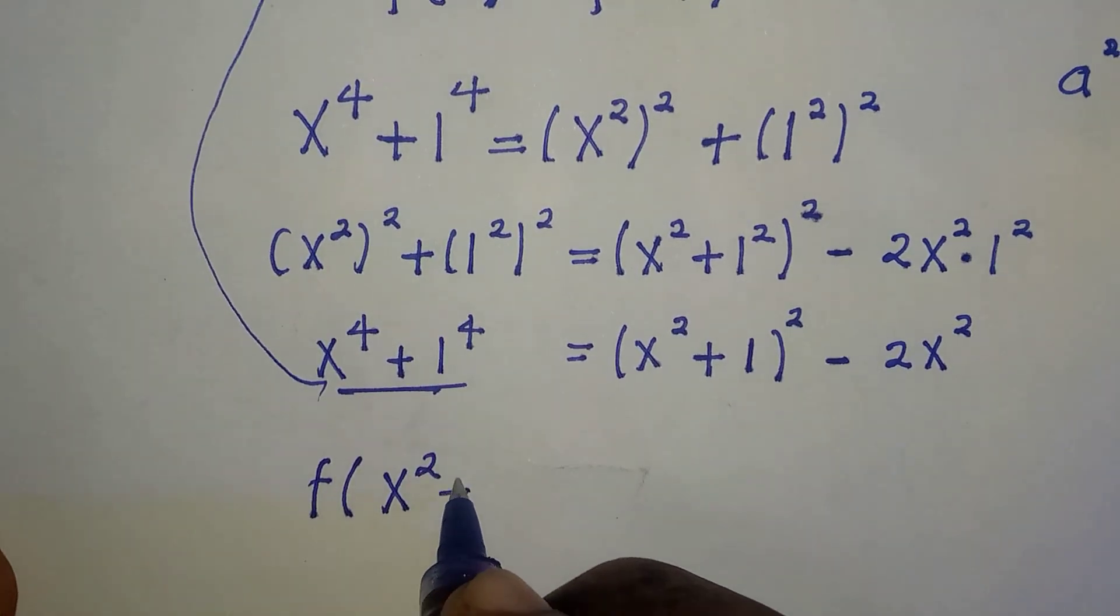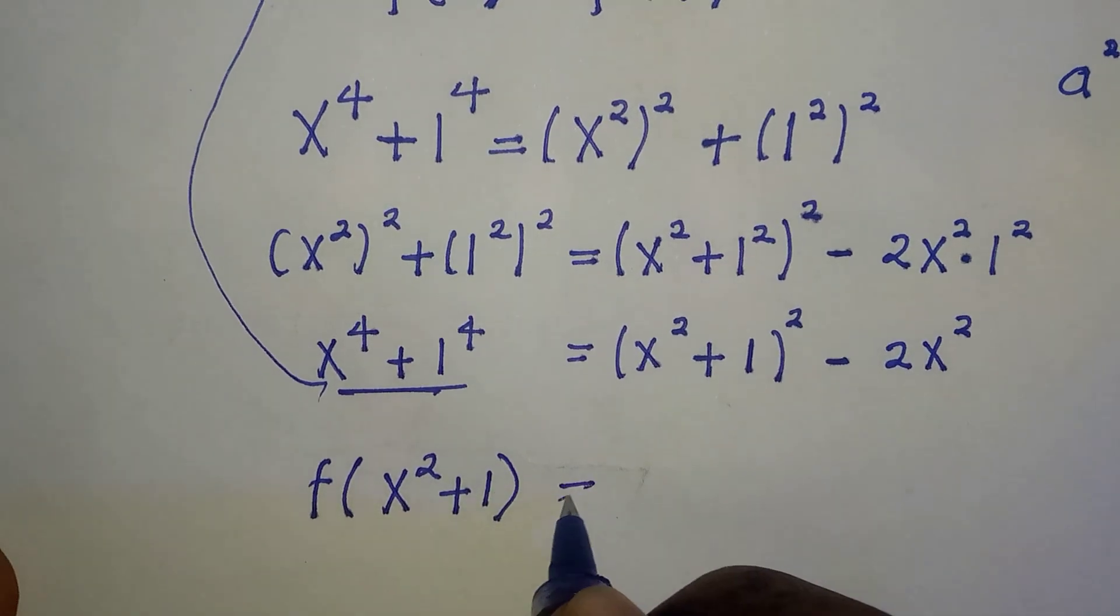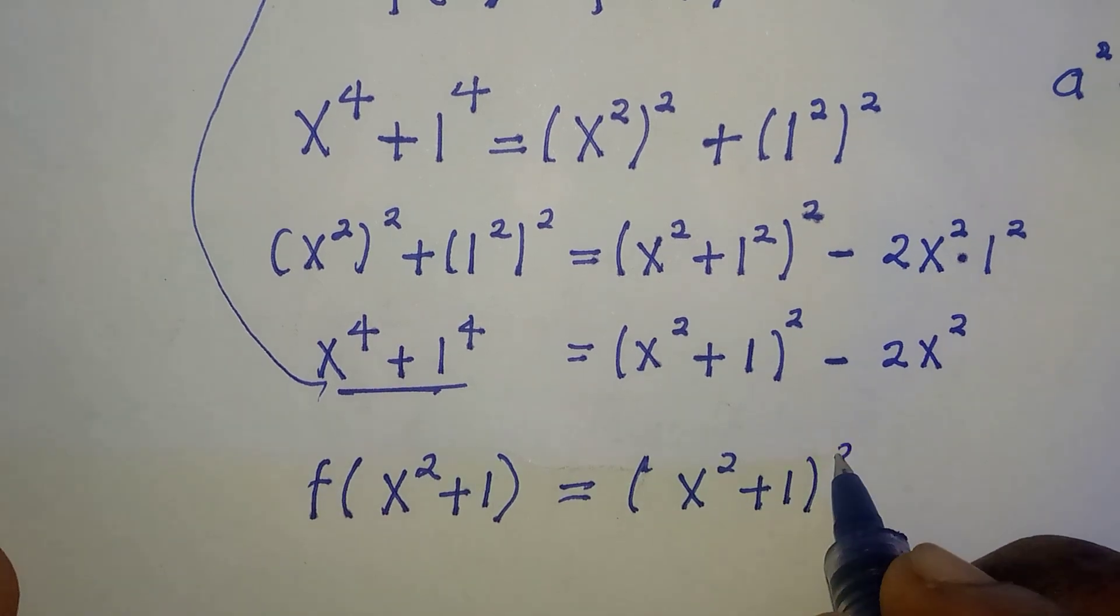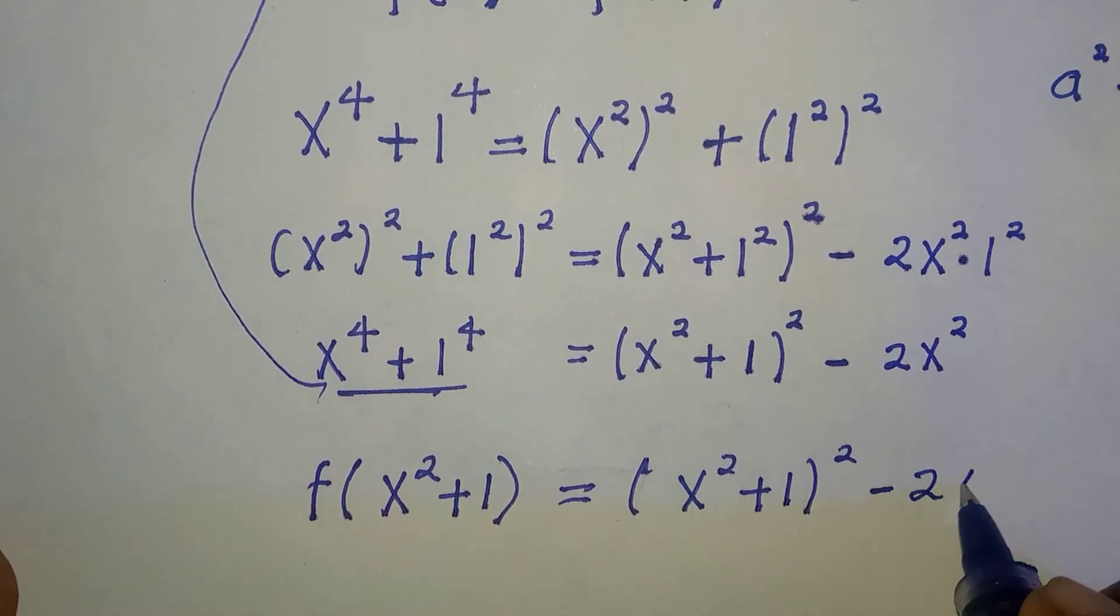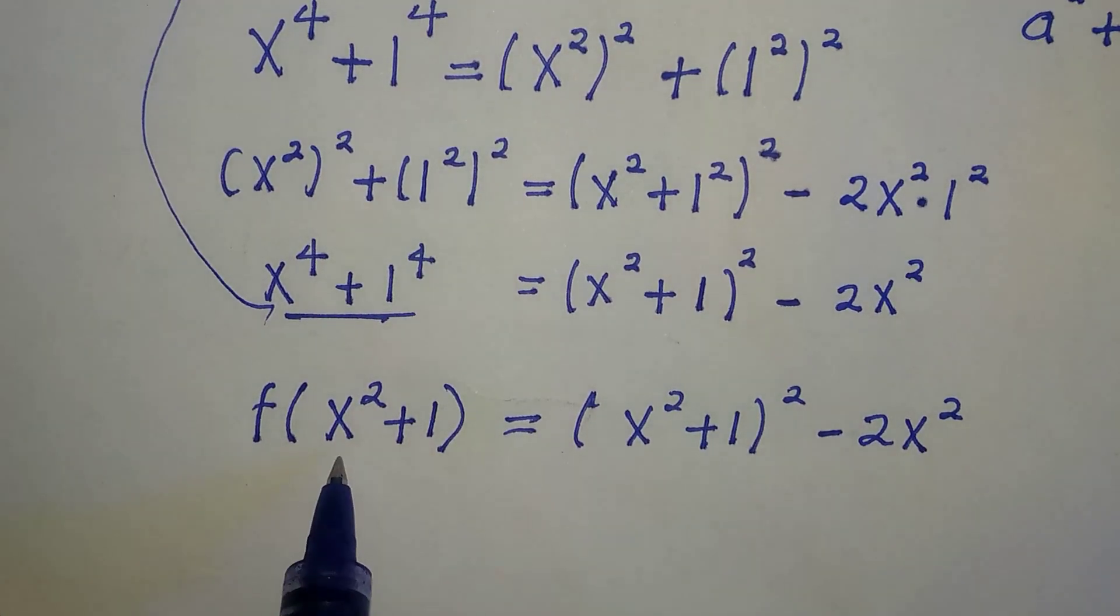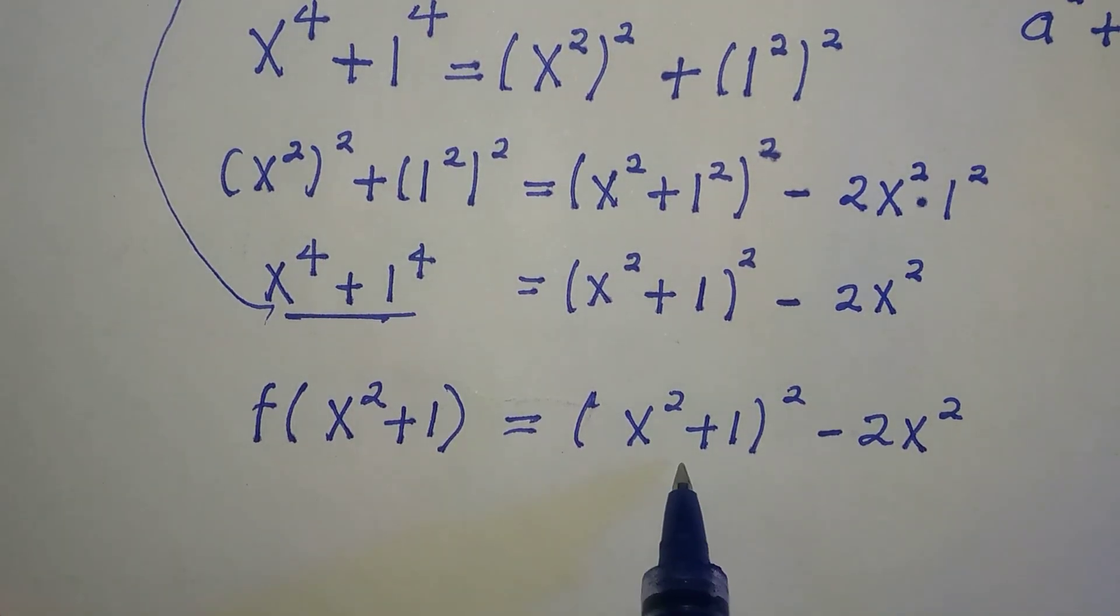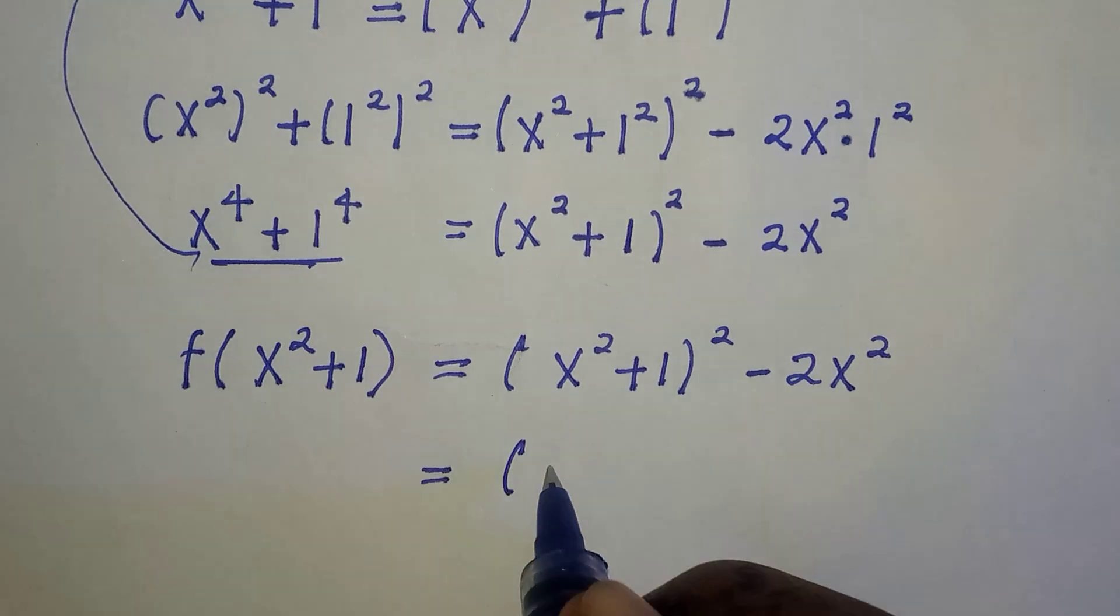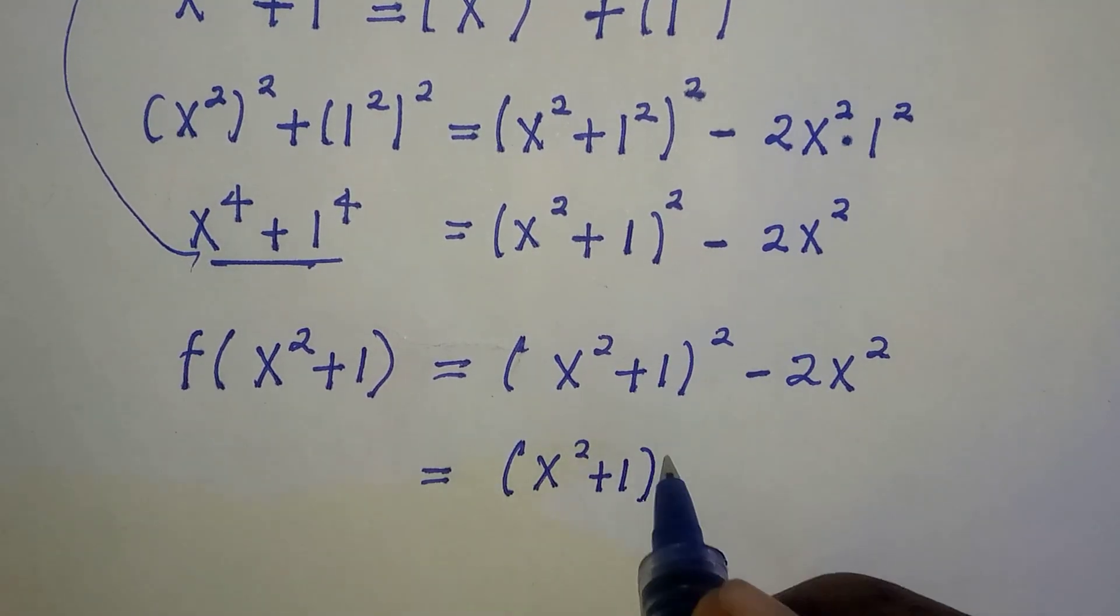Which everything is equivalent to (x² + 1)² minus 2x². But this doesn't look completely like what is in this function, and we can make this x² look exactly the same thing as what is in the function.